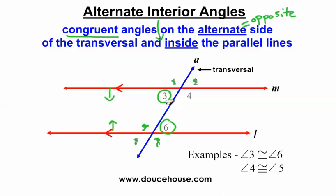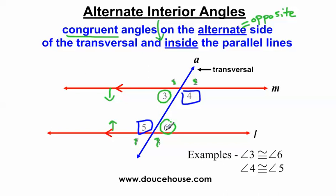Alternate interior angles come in pairs of two. What is an alternate interior angle to four? Inside the parallel lines, opposite sides of the transversal, and looks congruent to it - that would be angle five. So four and five is another example of alternate interior angles. Three and six is the other example of alternate interior angles - those are the two examples.